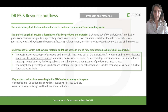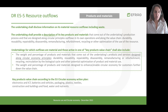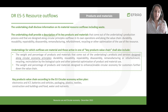If we move to resource outflows, it's really the parallel to what we just saw on inflows regarding products and materials. There is a qualitative description of the key products and materials that come out of the undertaking's production process and how they were designed along the value chain through circular principles: durability, reusability, repairability, disassembly, remanufacturing, refurbishing, recycling or other optimization. And then for the same list of sectors, the undertakings should also include some quantitative information.